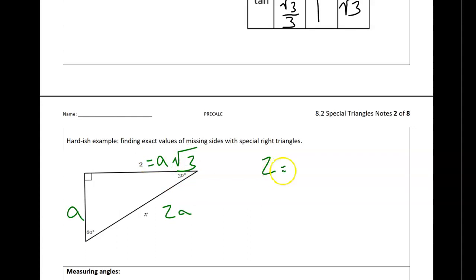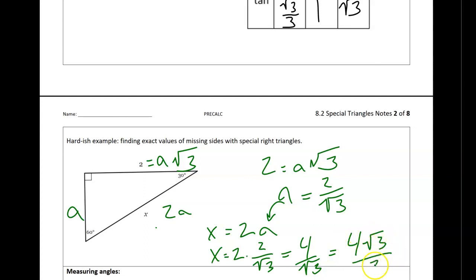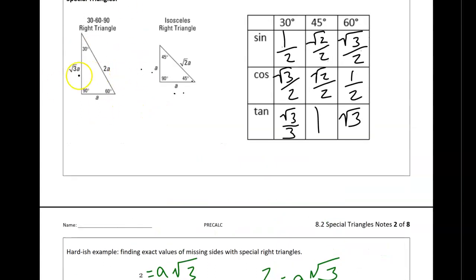So I have 2 equals a square root 3. a then would be, if I divide by square root of 3 on both sides, 2 over the square root of 3. And then I'm trying to find x. So x is equal to 2a. And I'm just plugging in my a. So x would be 2 times 2 square root 3, which would be 4 over the square root 3. And then I rationalize. So that's my solution there. So notice, if I label these, and the reason we use a is x is often included in the problem. If I label these, I can use them to make equations, just using this relationship here.